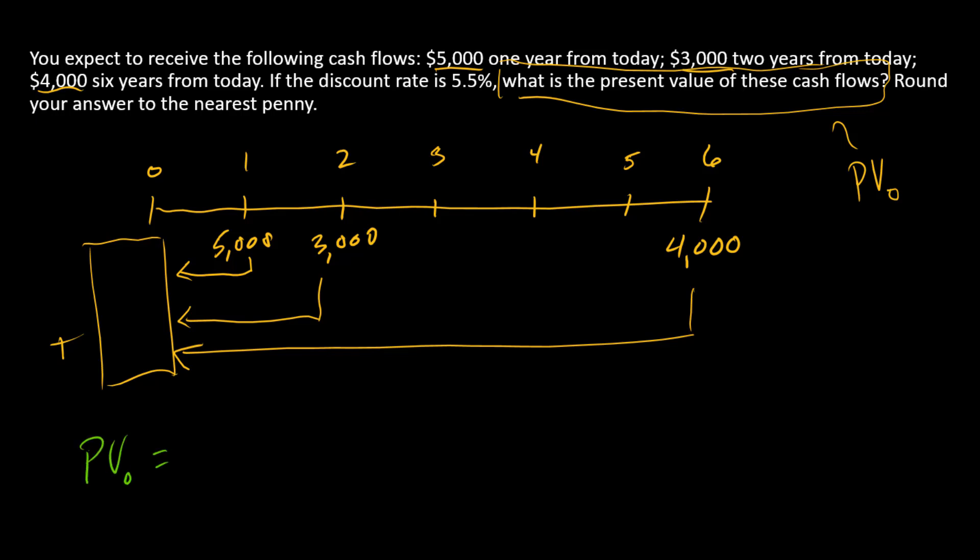So PV at time zero is the present value of the first cash flow. Since that first cash flow happens at time one, we're only going back one period, so the exponent there is one. The second cash flow's present value has an exponent of two in the denominator since it happens at time two.